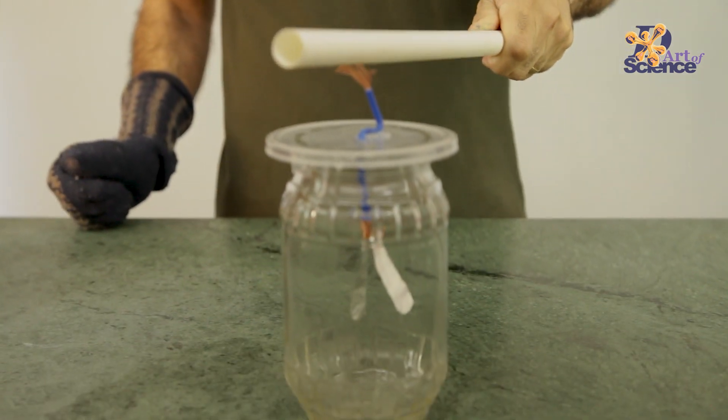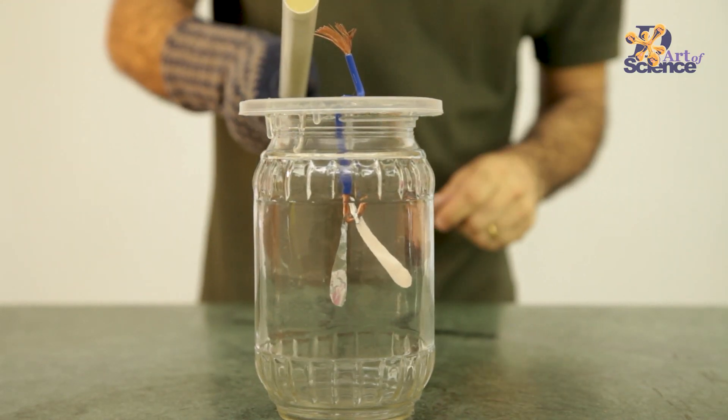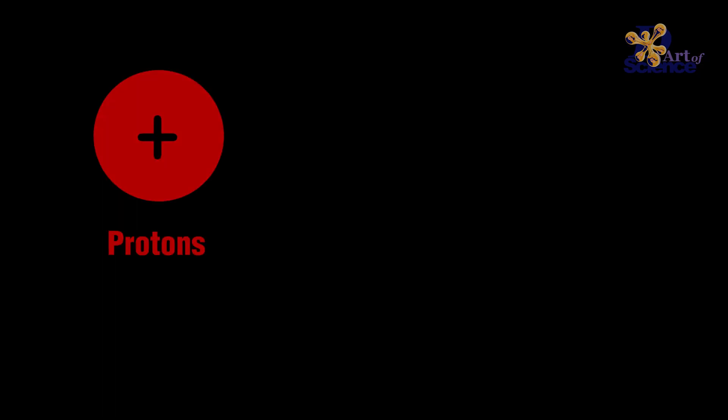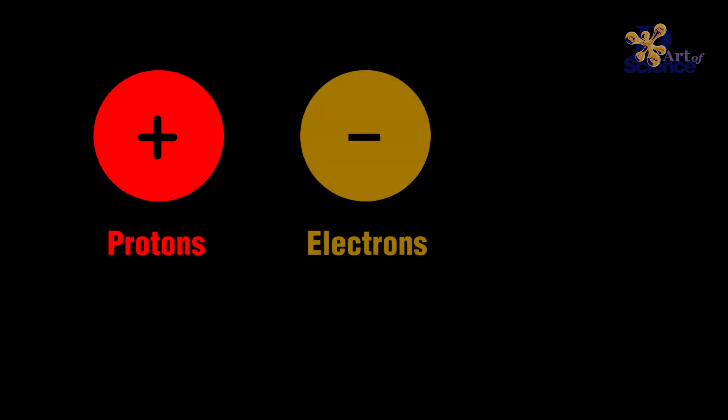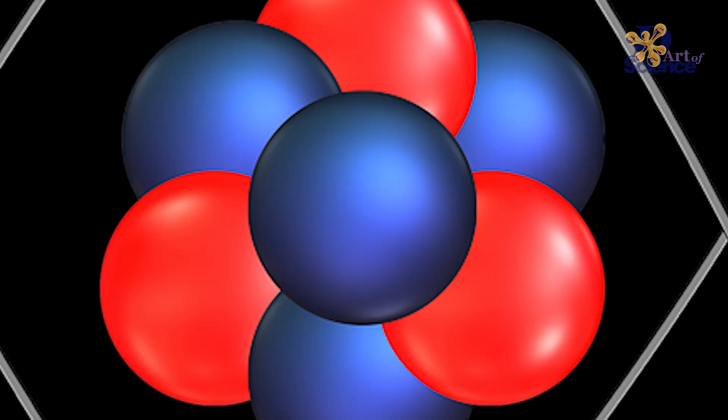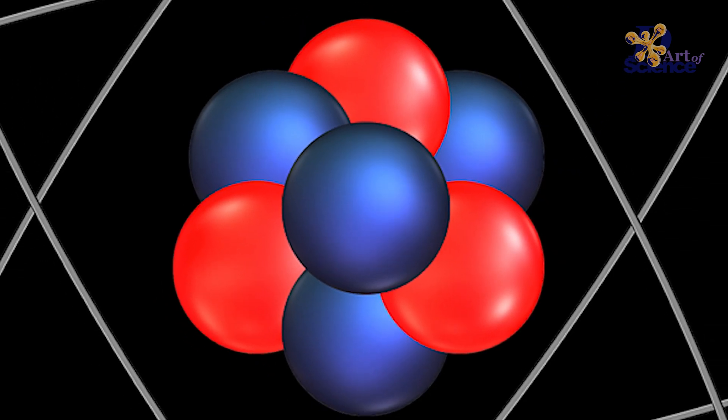The building blocks of everything around us are called atoms. These atoms are made up of three even smaller particles that carry different charges: the positively charged protons, negatively charged electrons, and the neutrally charged neutrons. While the neutron and the proton come together and stay at the center of the atom, the electrons spin around them.